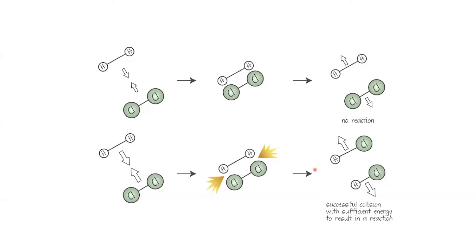So these reactant particles must collide with enough energy to overcome whatever energy barrier there is. That energy barrier is called activation energy. For any reaction, there is an activation energy which acts as a barrier. Successful collisions differ from unsuccessful collisions by the factor of activation energy that allows them to react. This is a condition that must be met for the reaction to occur.